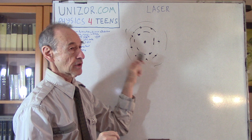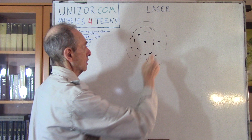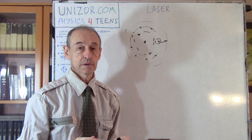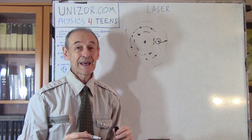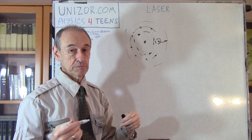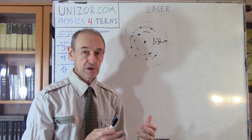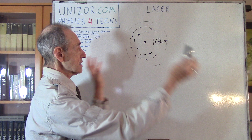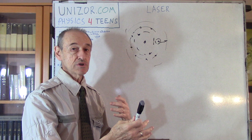Can an electron jump to a shell at a further distance from the nucleus? Yes, it can. But that shell has a different energy level, so just by itself it's unlikely to jump there — we need a certain push. If there is an exchange of energy, in particular radiation or electromagnetic oscillation, between something from outside and the electrons, this can give a push to the electron to jump from one shell to another.